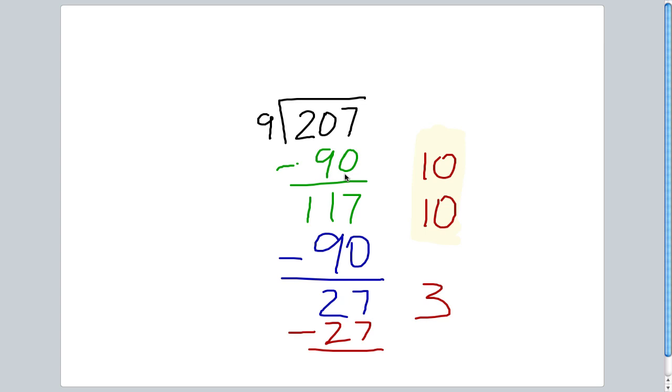I look over at the right-hand column that I've created to begin with and I see, in total to get to 207, I have taken out 23 9's. The answer to this problem then is 23.